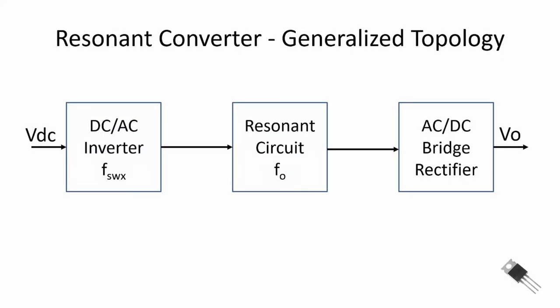Here's the block diagram of the generalized DC to DC resonant converter. There are three building blocks. The first building block is a DC to AC inverter structure, and we switch and have an output frequency of our inverter of F switching. We feed this power waveform into a resonant circuit that has resonant frequency F sub 0.